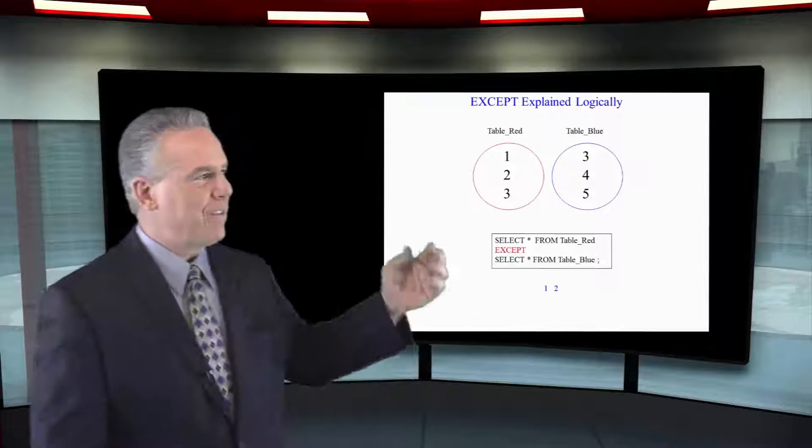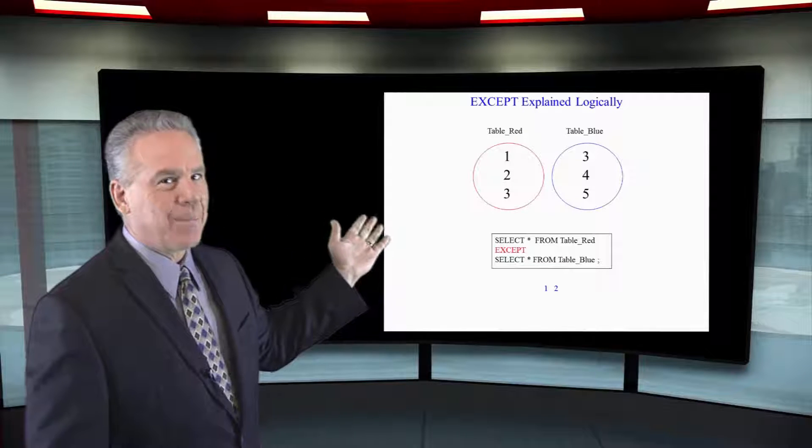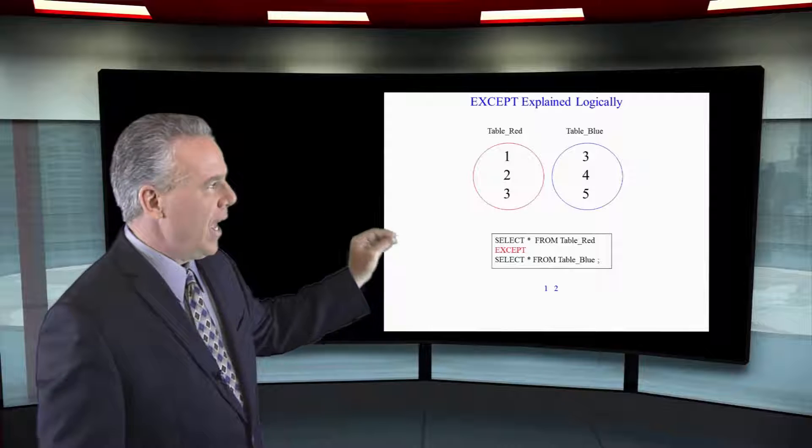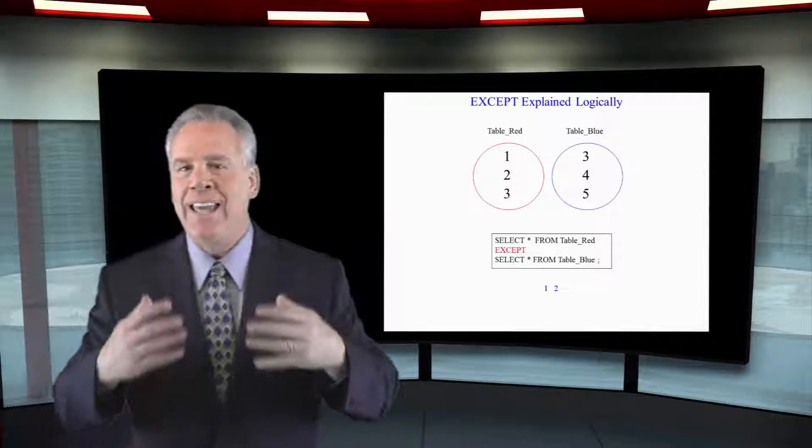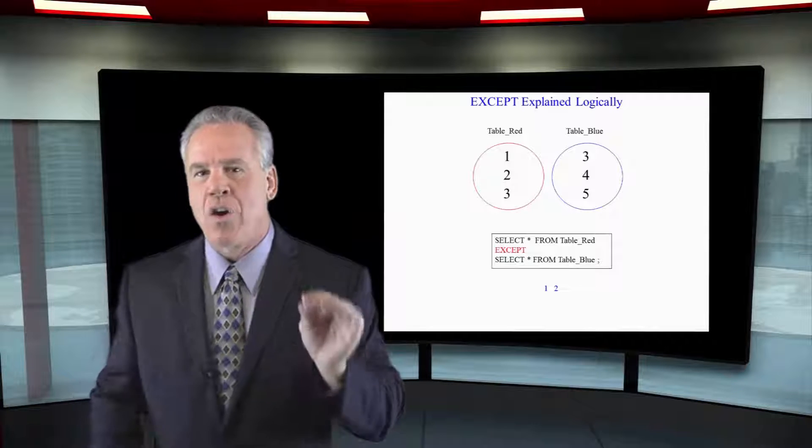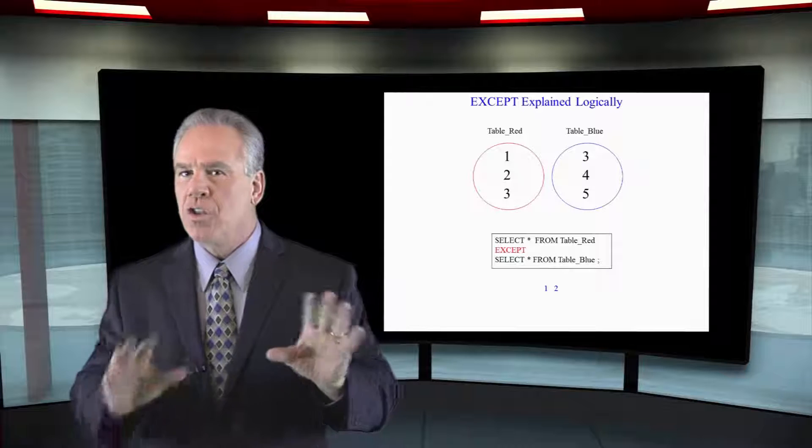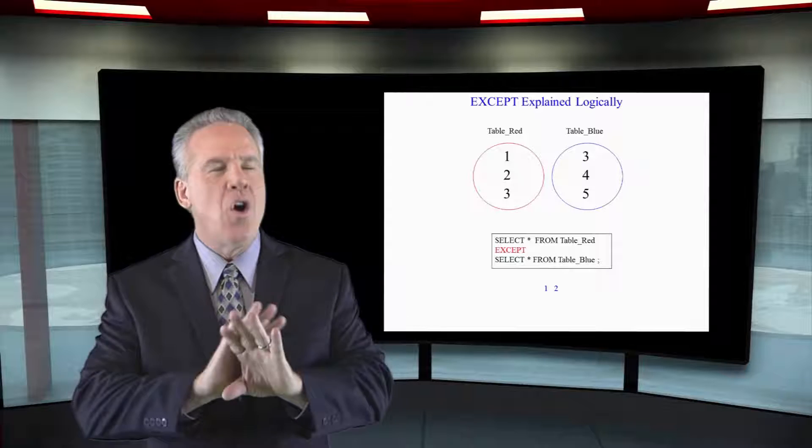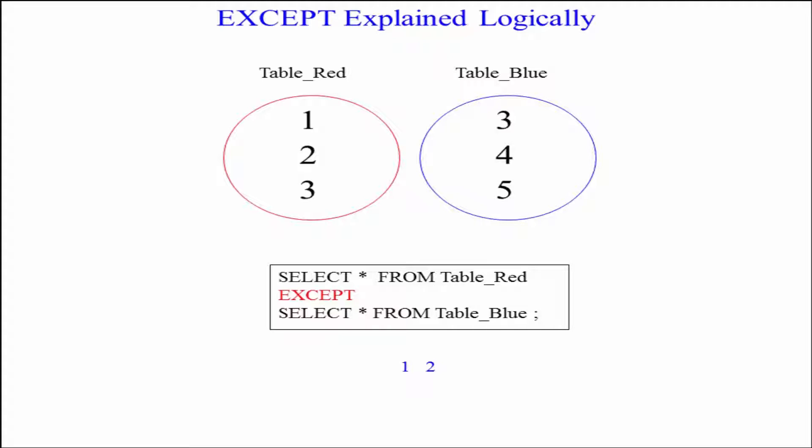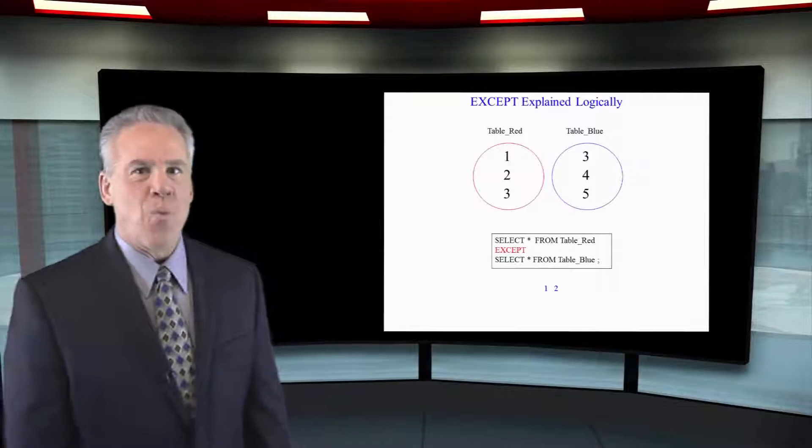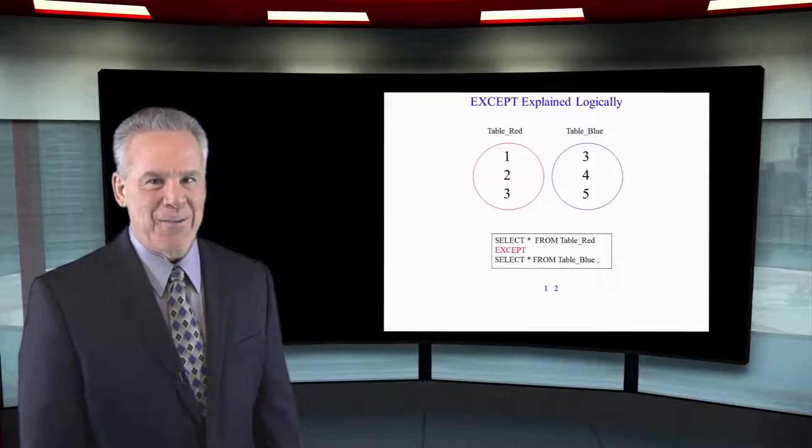Here we see select everything from table red, except select everything from table blue. And the only thing that can come back are the contents of the first query. So, potentially, the only things that could even possibly come back would be one, two, three. Except if one of those or more are in table blue, and then we exclude them. So, in this case, one, two is the only thing coming back.